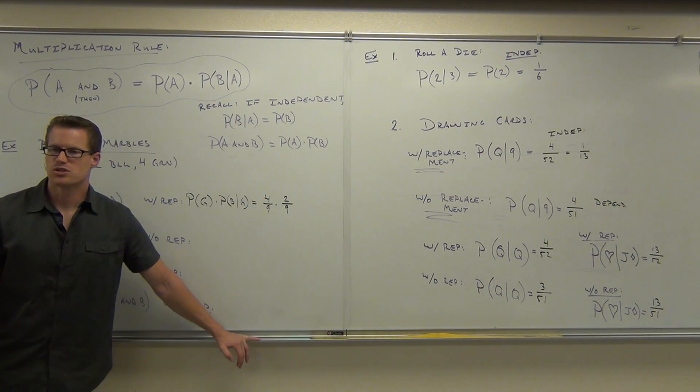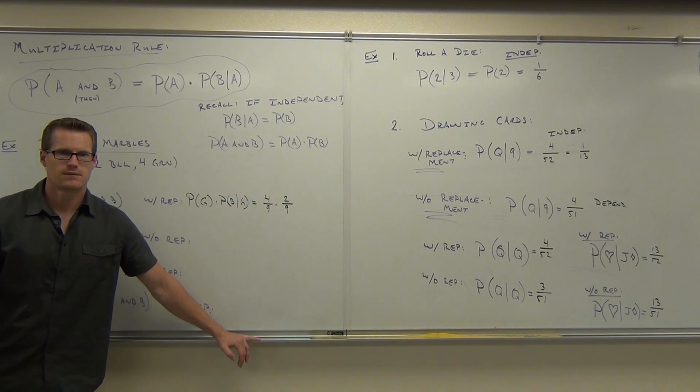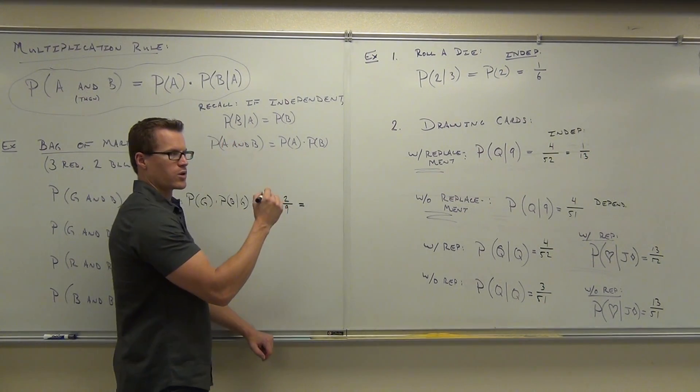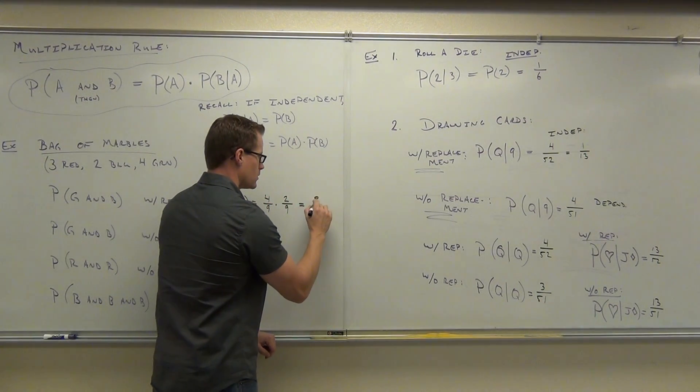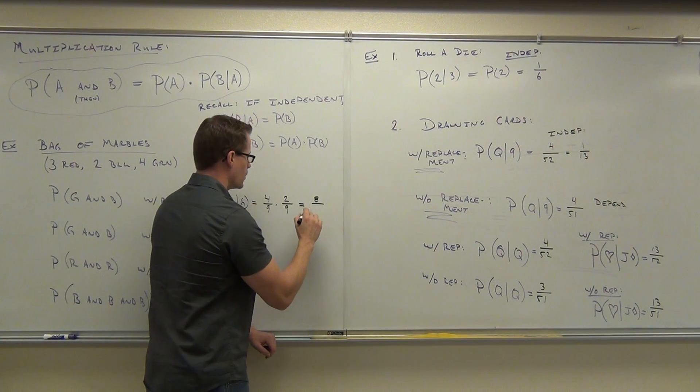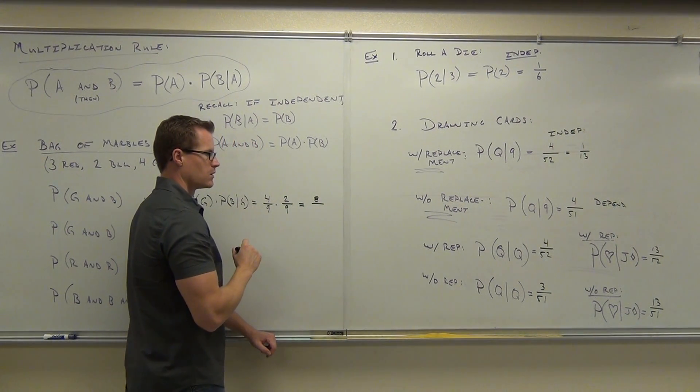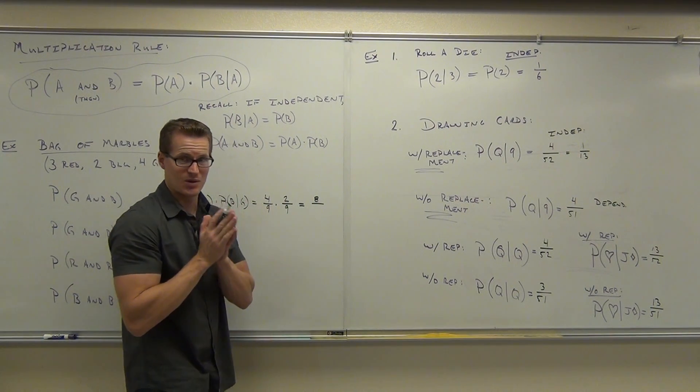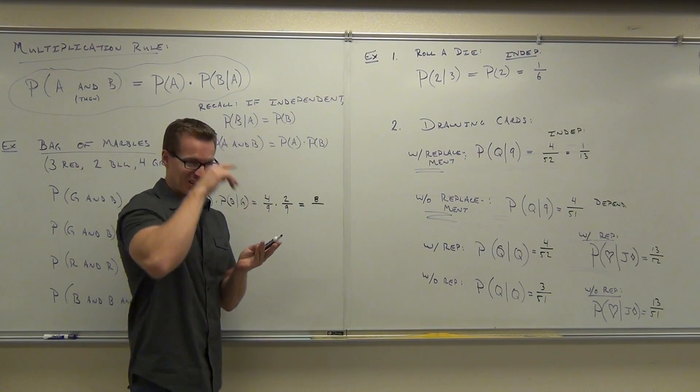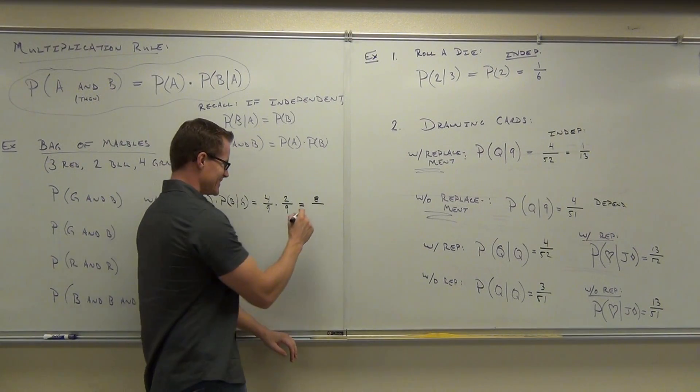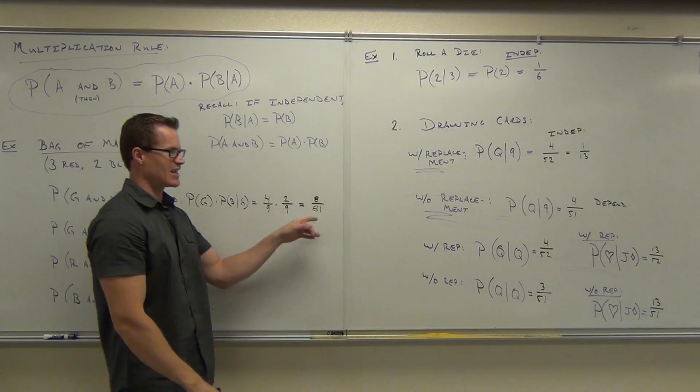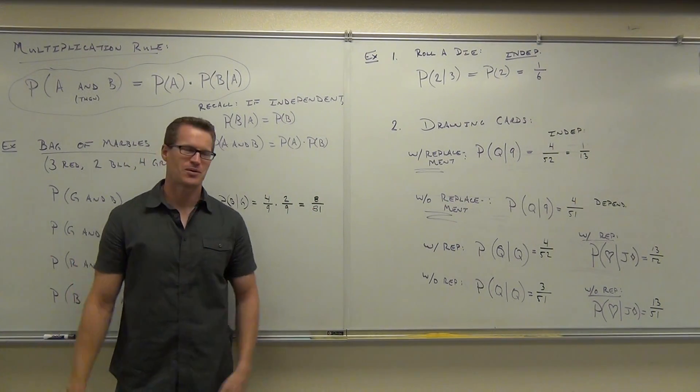How do you multiply fractions? Straight across. So we're going to get what on our numerator? Eight. Over? Eighty-one. Let's multiply fractions. We do know how to multiply fractions.